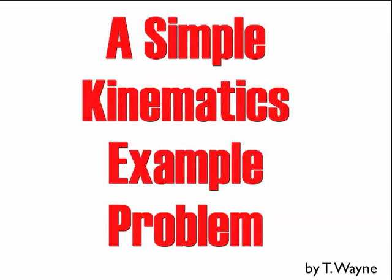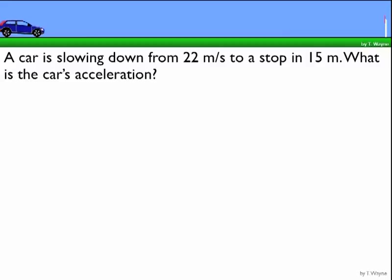This video is going to show you the steps involved in solving a simple kinematics word problem. To begin with, let's read the problem. A car is slowing down from 22 meters per second to a stop in 15 meters. What is the car's acceleration?